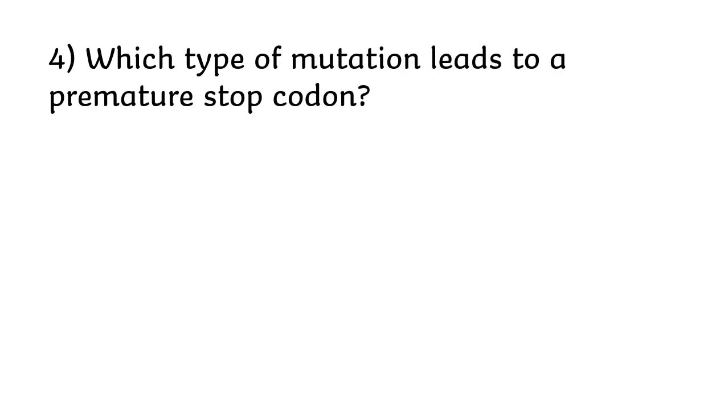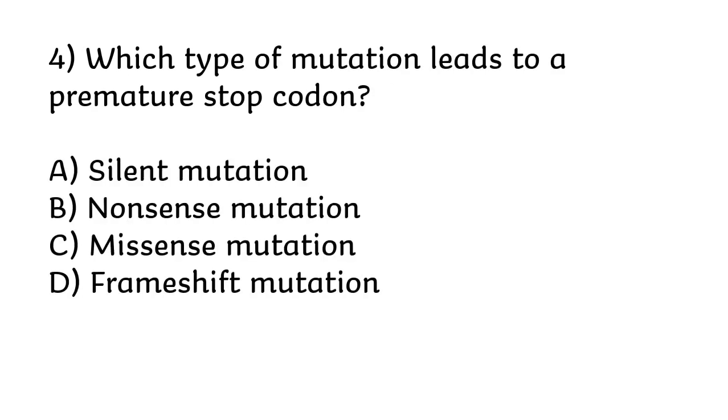Which type of mutation leads to a premature stop codon? Silent mutation, nonsense mutation, missense mutation, or frameshift mutation. The correct answer is option B, nonsense mutation.